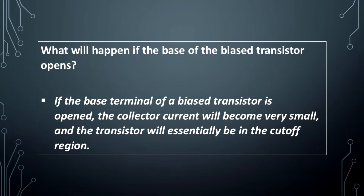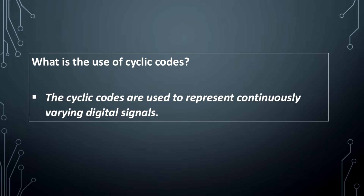What will happen if the base of the biased transistor opens? If the base terminal of a biased transistor is opened, the collector current will become very small and the transistor will essentially be in the cutoff region.